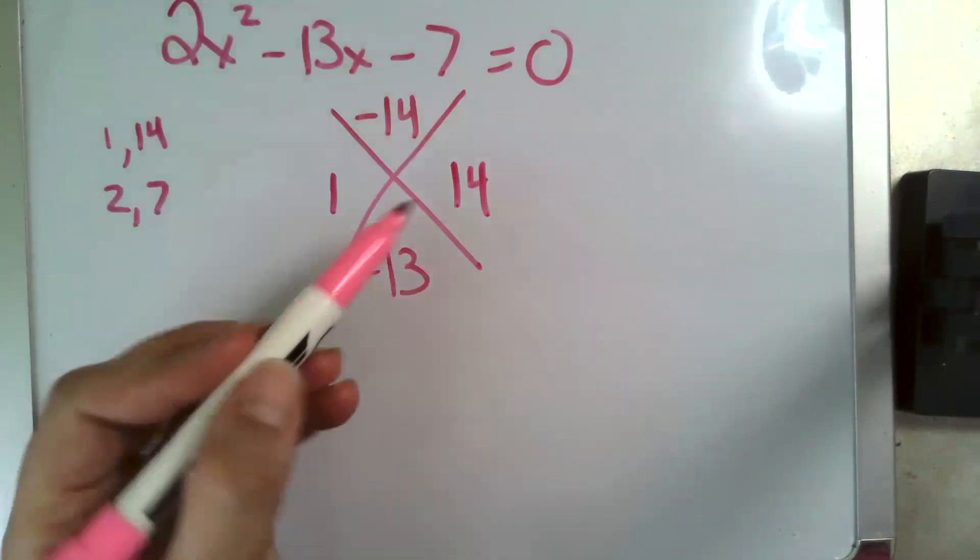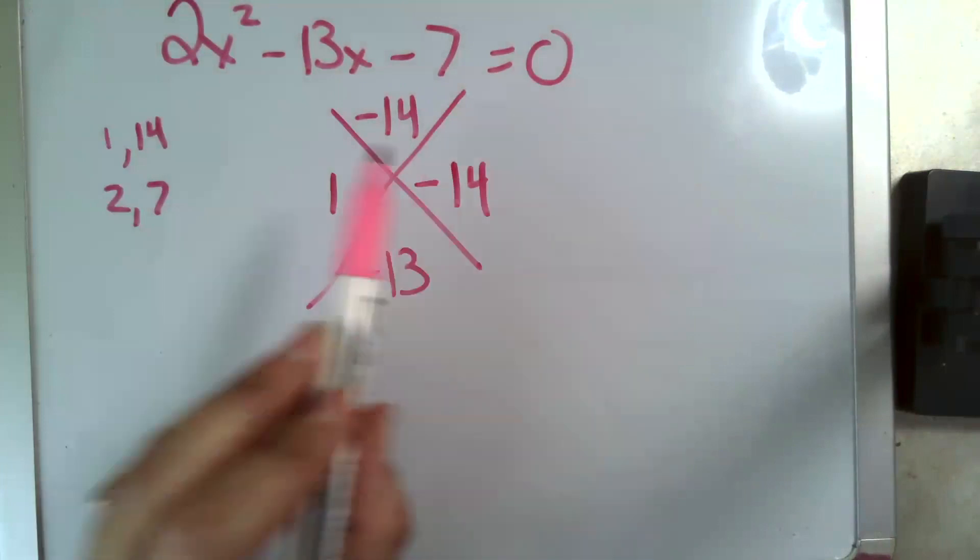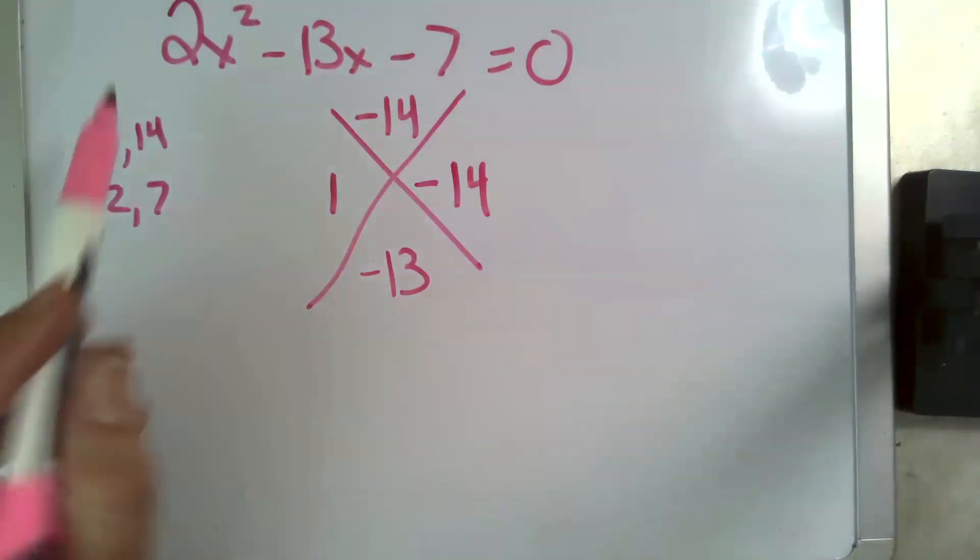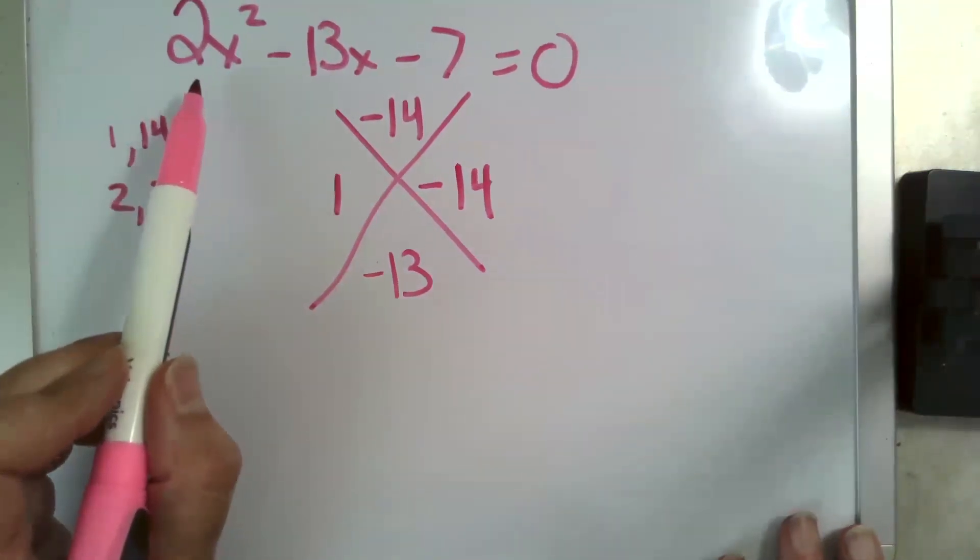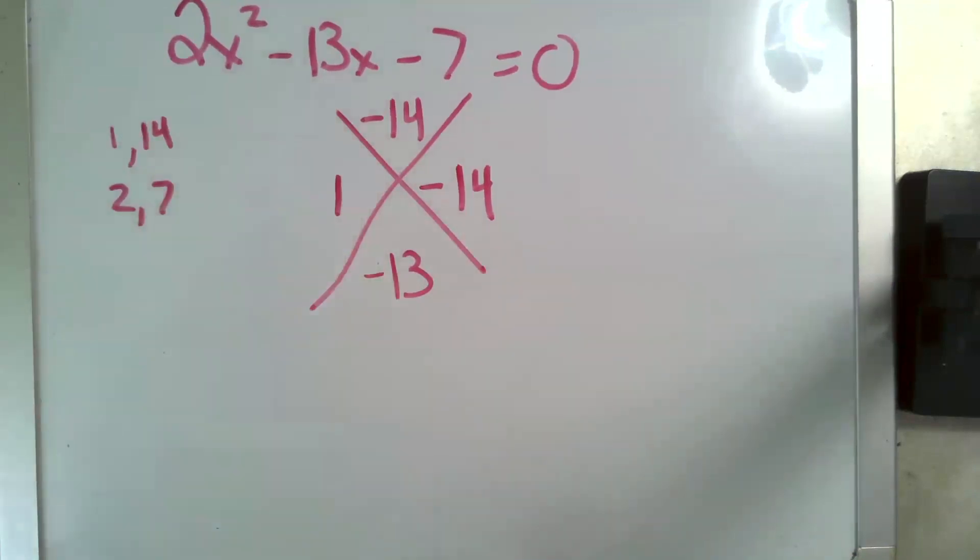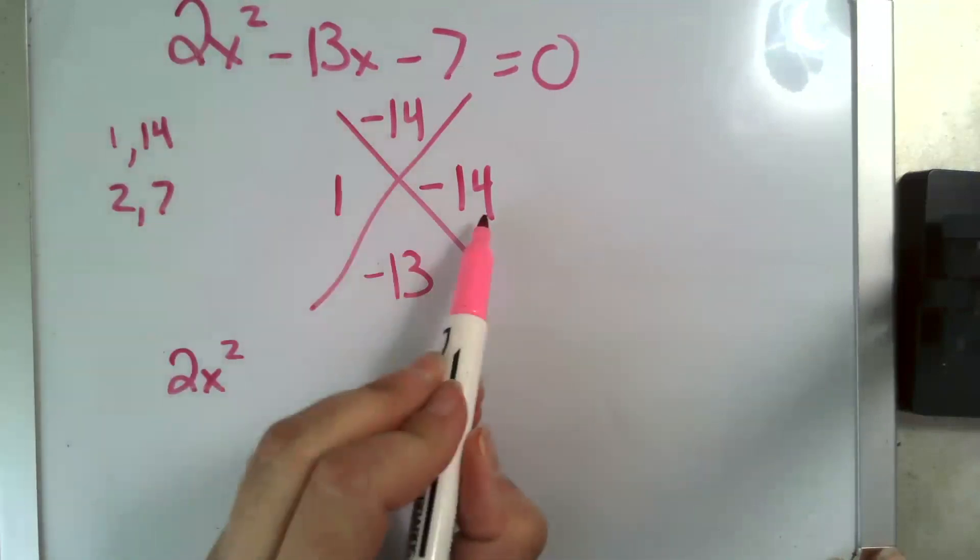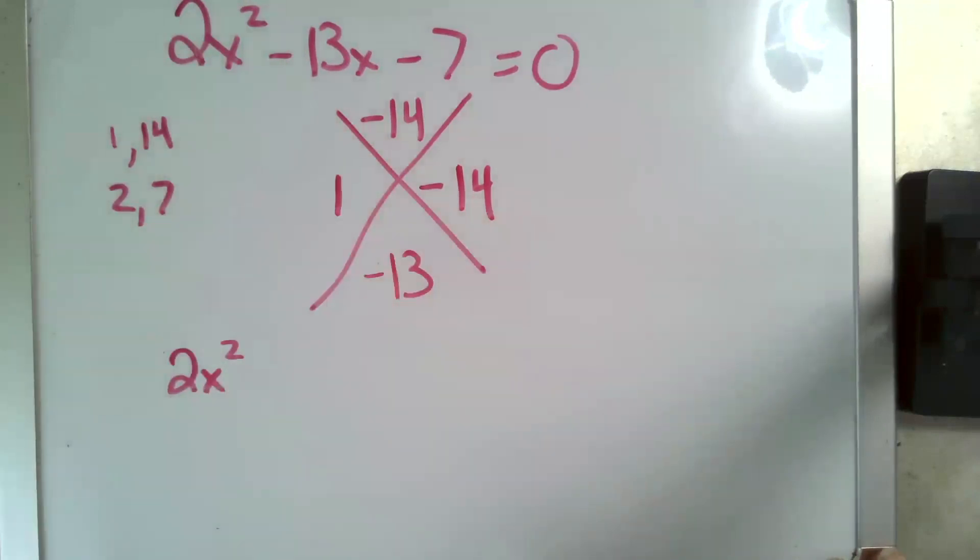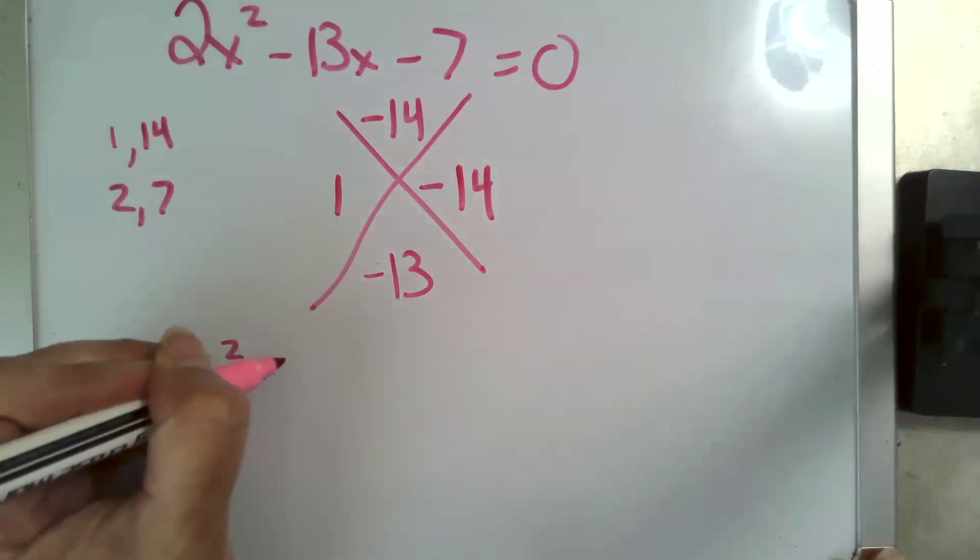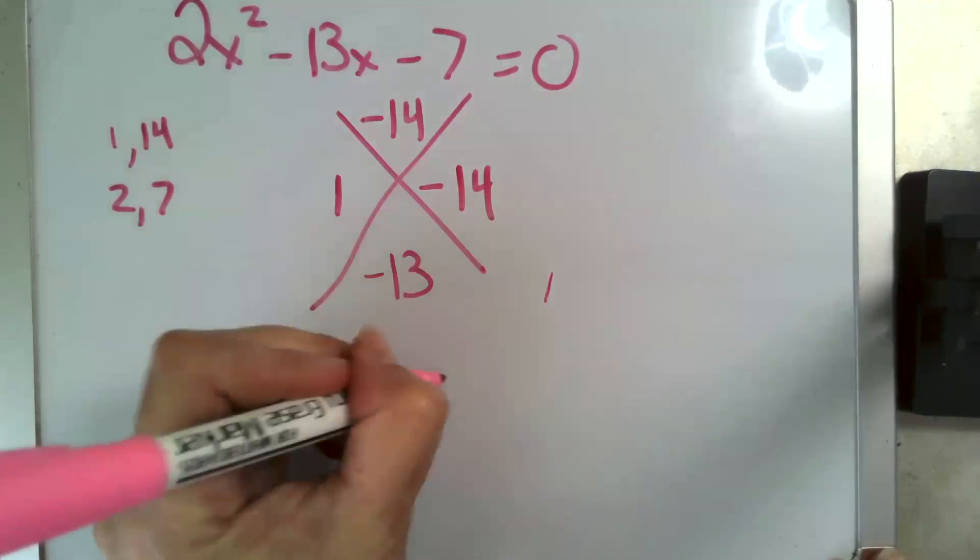And since this is negative, it's our 14 that has to be negative. I think of it as sort of overpowering the other one. Now, I know because this coefficient of my x squared is not a one, these aren't my answers. I'm not done. Now, I write it out like foil. Firsts, right there, 2x squared. Outside and inside, those are my coefficients I've just found. Plus 1x, minus 14x, and then my last comes down.